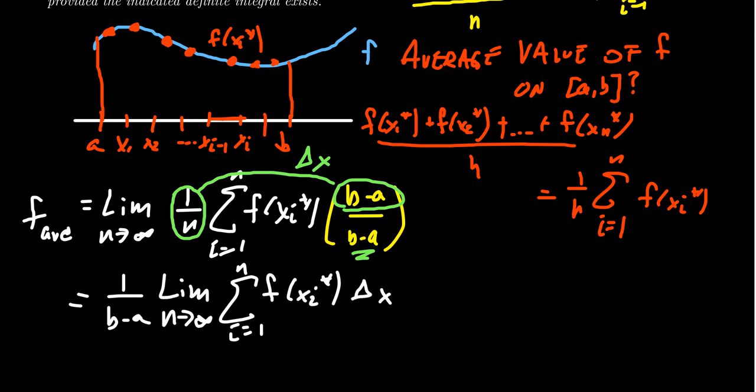f of xi star times delta x. Now, the limit of this sum, which is now a Riemann sum, will be the integral. We get 1 over b minus a times the integral from a to b of f of x dx. And so we get a very nice simple formula for this idea of average value. The average value of a function will be the area under the curve divided by the length of the interval.